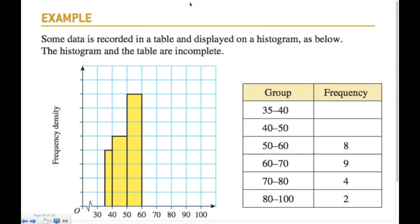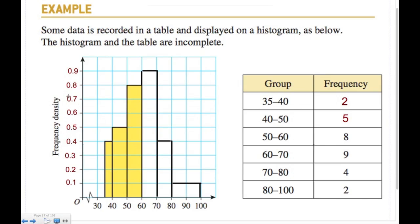That lets us label the frequency density axis. Now, looking at the 40-to-50 bar: its frequency density is 0.5. A really important point — because frequency density equals frequency divided by class width, it follows that frequency equals frequency density times class width. In other words, the area of the bar represents the frequency. So for this bar: 10 times 0.5 equals 5.